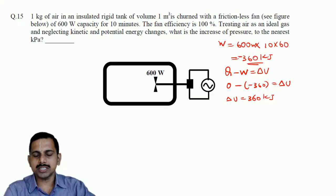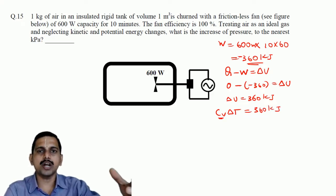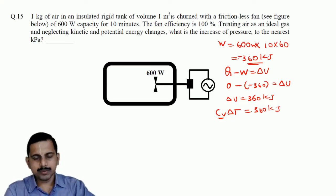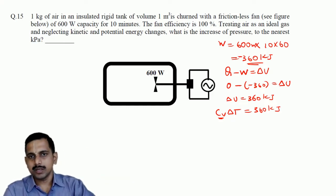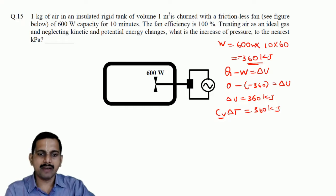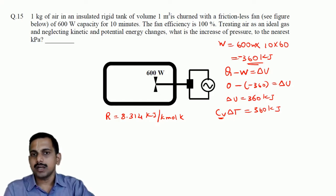What is delta U? Delta U can be written as Cv times delta T, equal to 360 kJ. But what is Cv? Cv is not given in the question. At the beginning of the question paper, they have given R as 8.314 kJ/(kmol·K). Then molecular weight of air is given as 29.